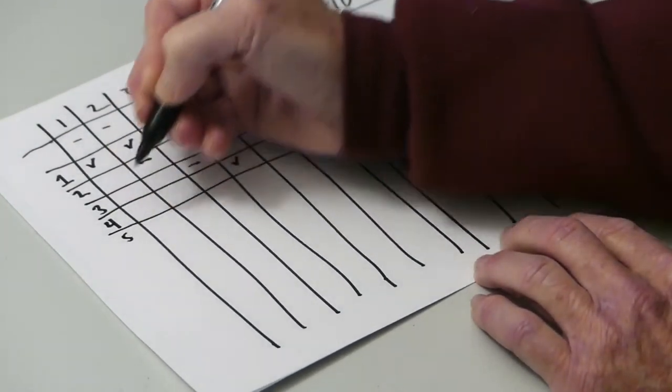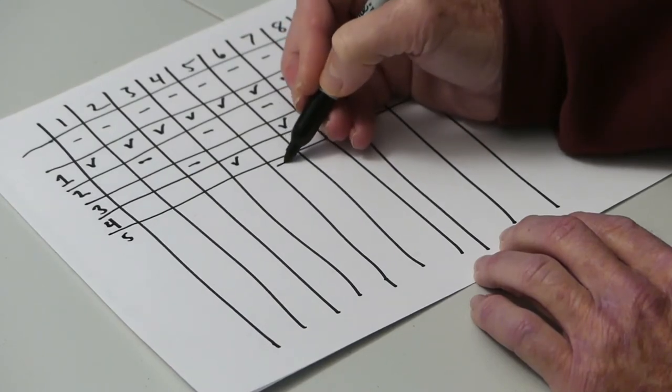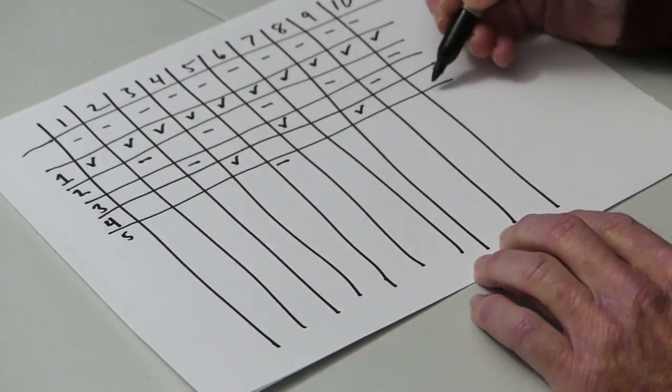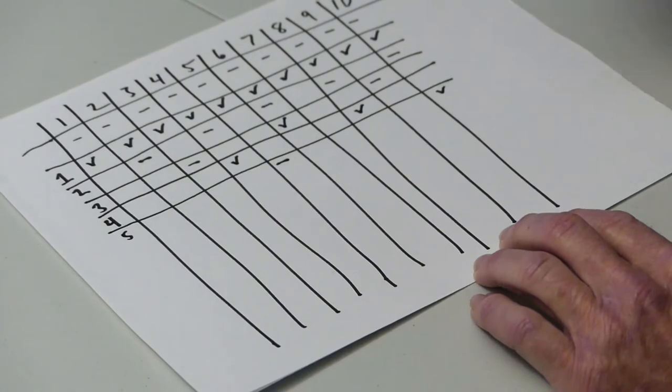Student number 5 starts at locker number 5 and closes it. 5 plus 5 is 10, and opens it.